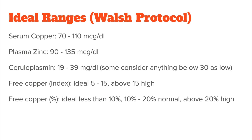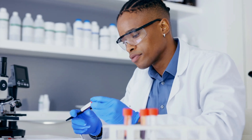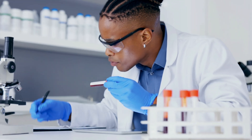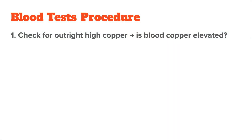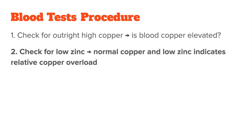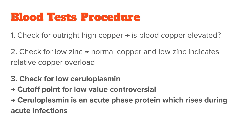For free copper percentage, ideal would be less than 10%; 10 to 20 can be considered normal, and above 20% is considered high. Basically, if you wanted to use just blood tests, you'd check: one, if you have outright high blood copper; two, if you have low zinc, because normal copper and low zinc would still mean a relative copper overload; and three, if you have low ceruloplasmin, which would mean your body cannot keep copper bioavailable.